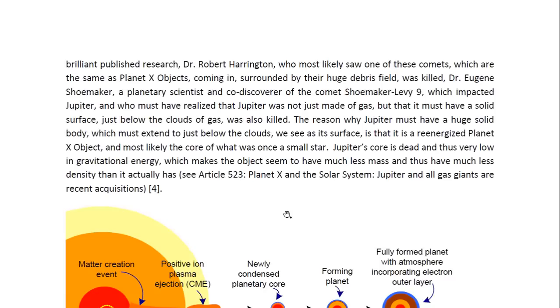Dr. Eugene Shoemaker, a planetary scientist and co-discoverer of the comet Shoemaker-Levy 9, which impacted Jupiter, and who must have realized that Jupiter was not just made of gas, but that it must have a solid surface just below the clouds of gas, was also killed. The reason why Jupiter must have a huge solid body, which must extend to just below the clouds we see as its surface, is that it is a re-energized Planet X object, and most likely the core of what was once a small star.